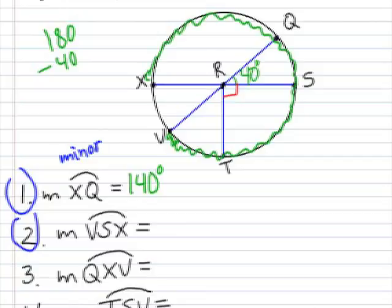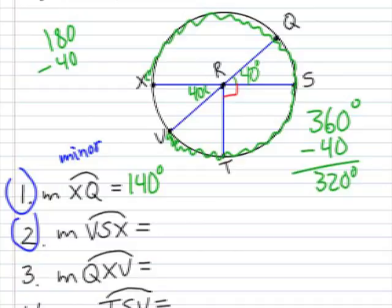The important thing to remember here is that this is a 40 degree angle. We have vertical angles inside. So it is going to be 360 degrees all the way around the circle. Take away the 40 that's left. So 320 degrees for that major arc.